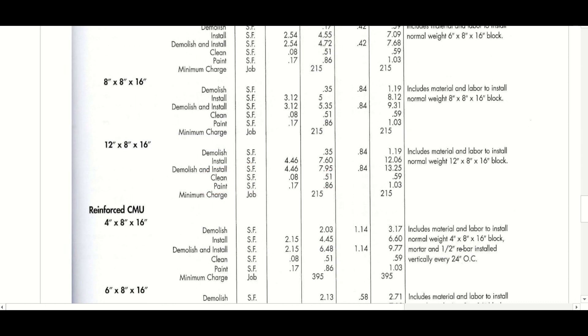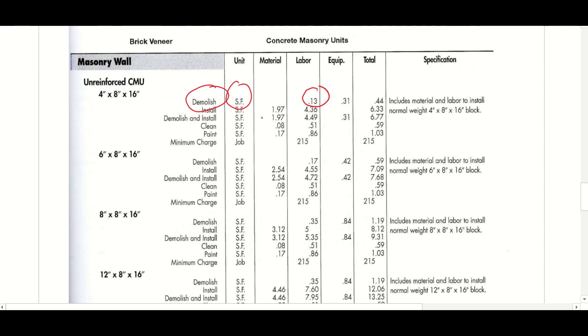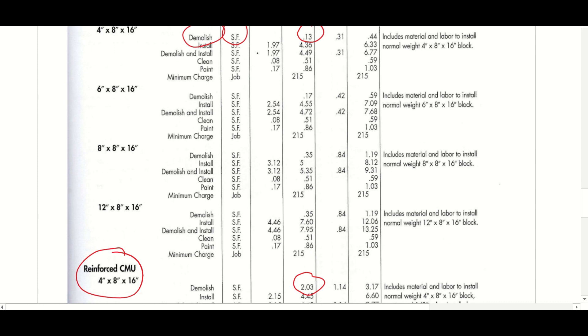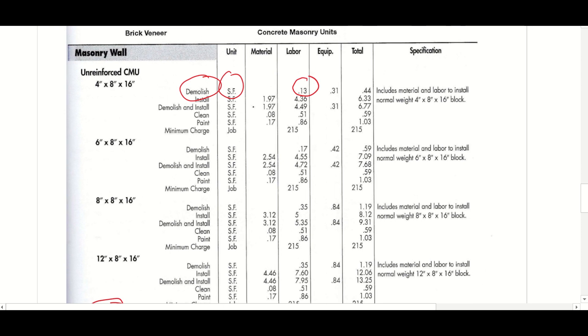Compare the unreinforced CMU to the reinforced CMU. To demolish, that would be $2.03 compared to 13 cents. Considerable difference. So you can see just from the labor standpoint, what it would take to take down a reinforced CMU wall. I suppose if you were to drive a car into it, it would hold up that much better.